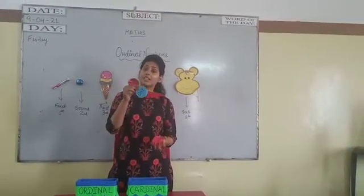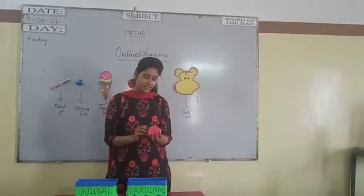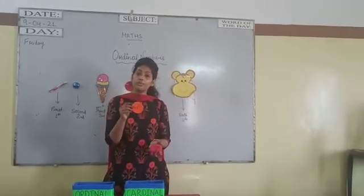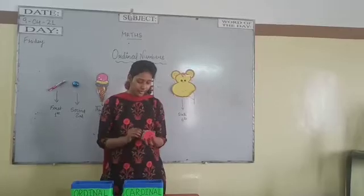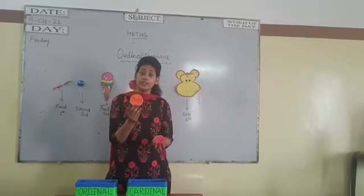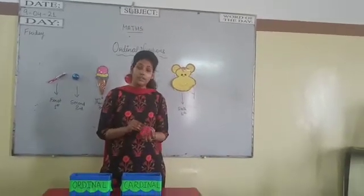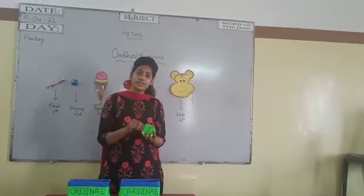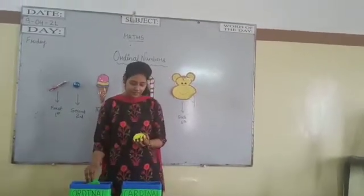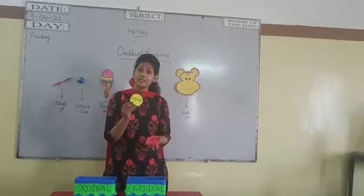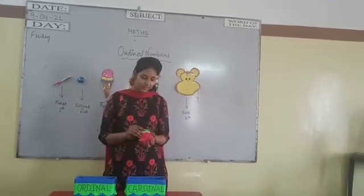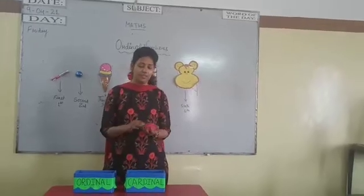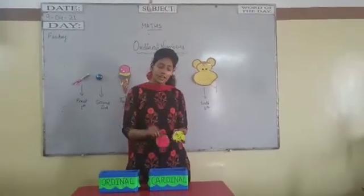One — cardinal. Yes, this is cardinal. Two — cardinal number. Three — cardinal number. Third — ordinal number. Second — ordinal number. First — yes, ordinal number. Four — cardinal number. Ten — cardinal number.